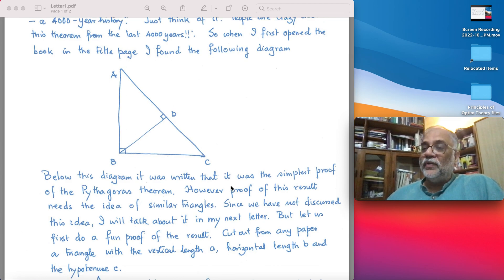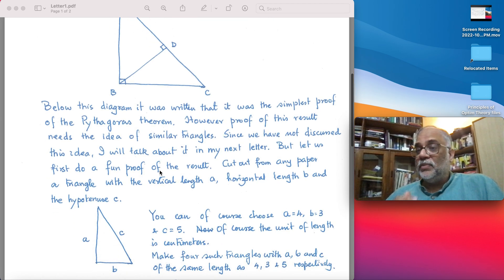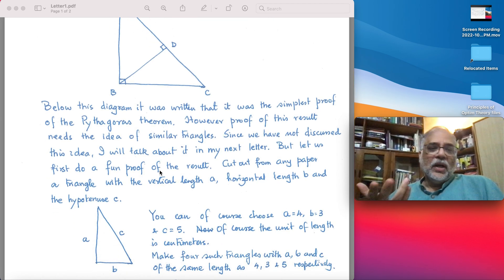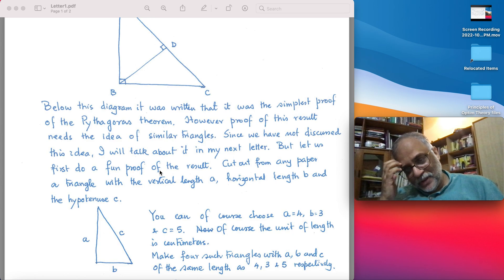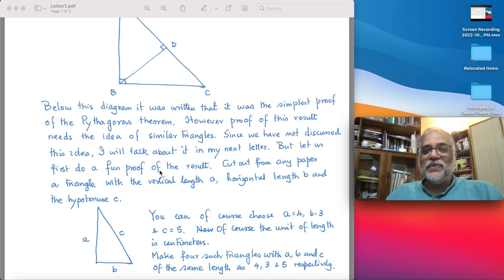Below that diagram it was written that it was the simplest proof of the Pythagoras theorem. However, proof of this result needs the idea of similar triangles. Since we have not discussed this idea, I will talk about it in my next letter. But let us first do a fun proof of the result.